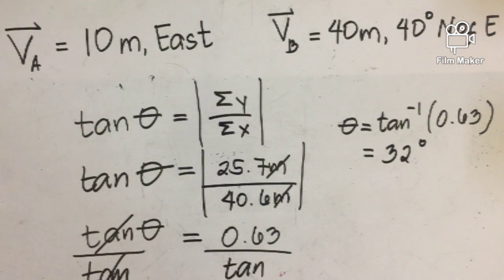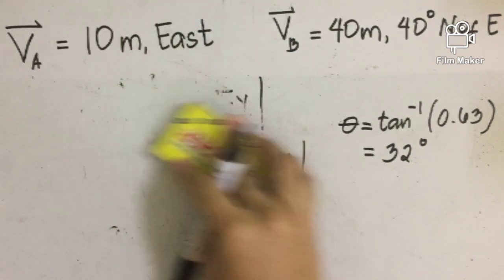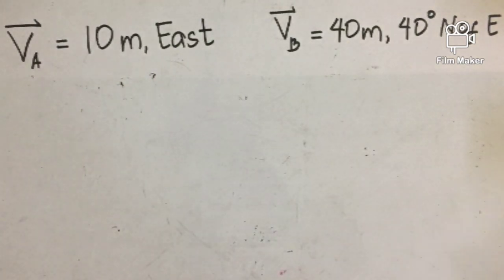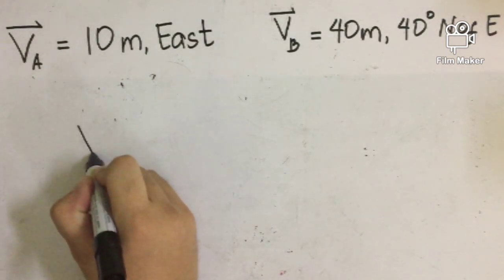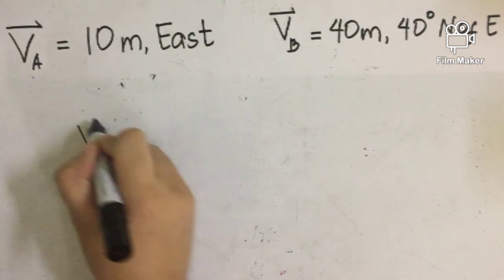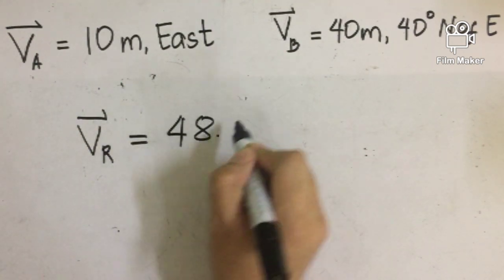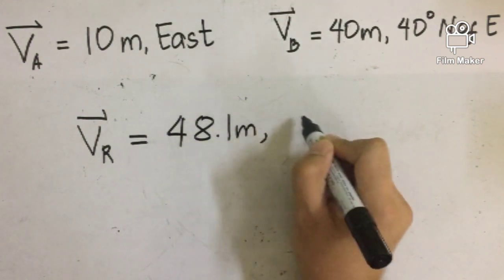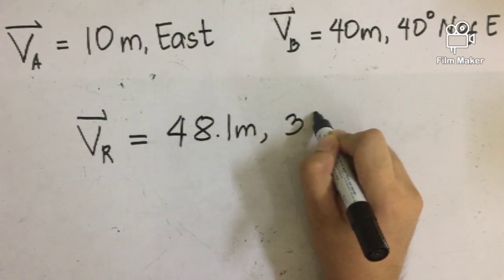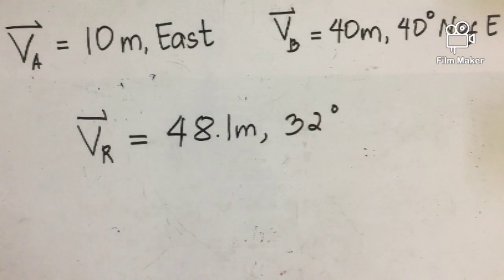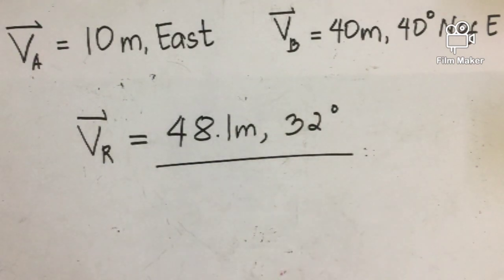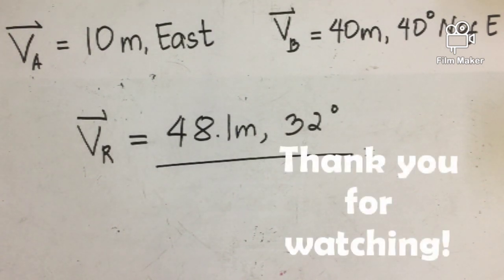How are you going to report your vector? You can report your vector as Vector R equals 48.1 meters going 32 degrees north of east. That is how you find the resultant vector using the analytic method.